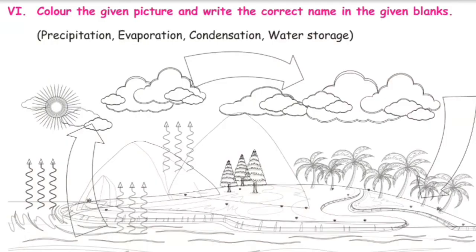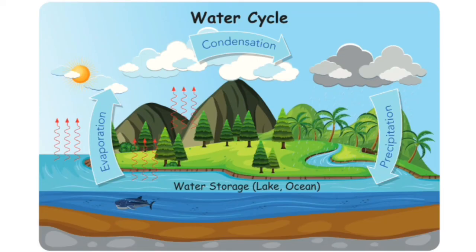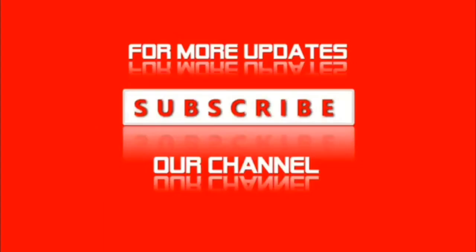Roman numeral 6: color the given picture and write the correct name in the given blanks. Refer to page number 72 in your book — color it and fill in the names correctly. Hope you understood all the questions. Please like, share, and subscribe our channel. Thanks for subscribing.